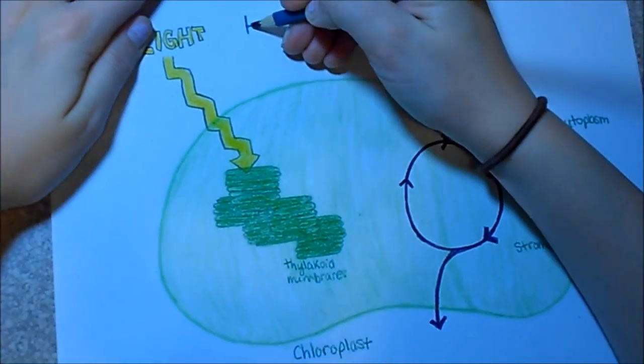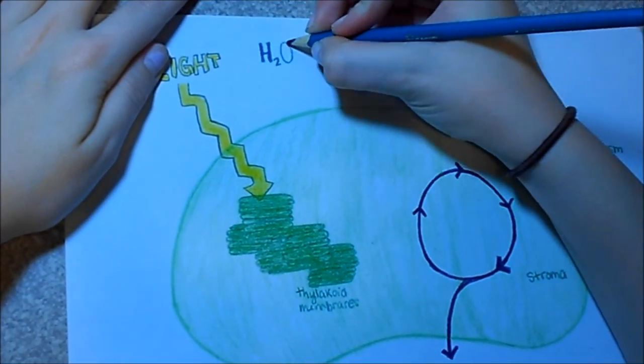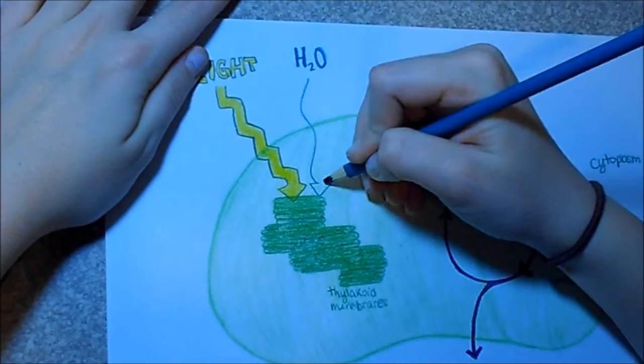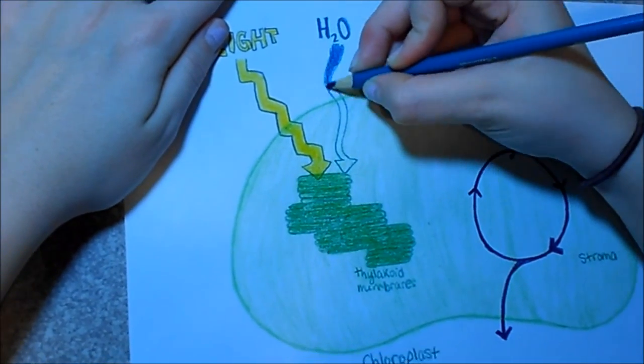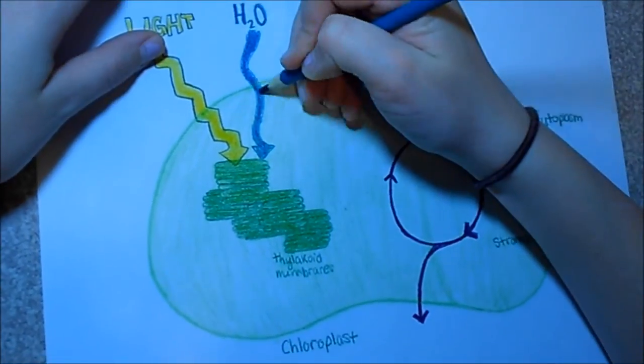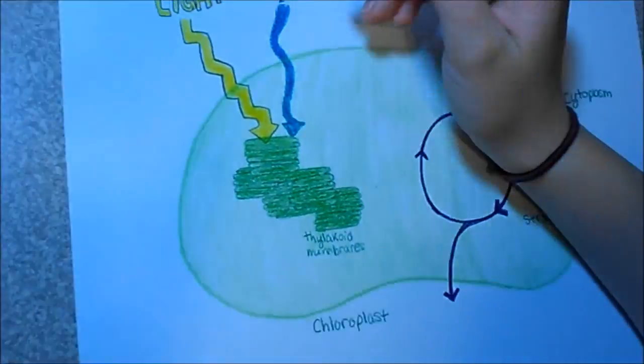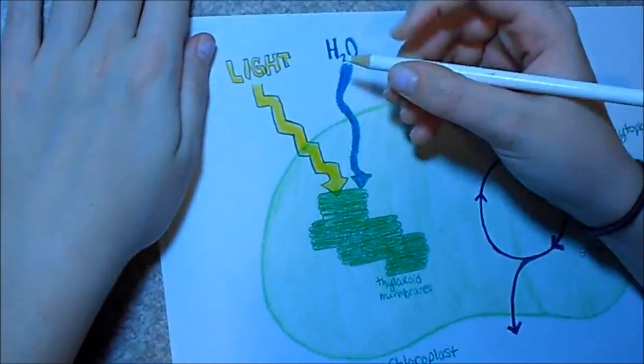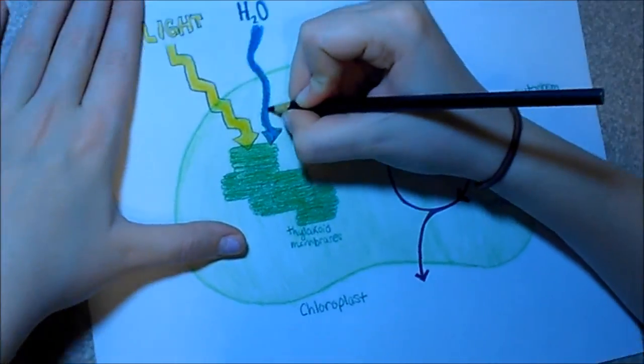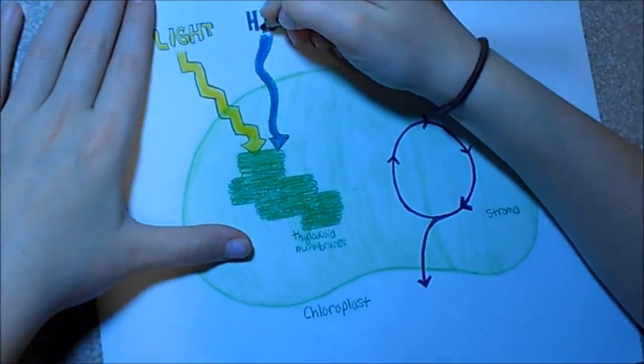H2O molecules enter the chloroplasts and through photolysis break apart into two hydrogen molecules and one oxygen molecule. The hydrogen molecules go into the ATP synthase, which is an enzyme in the electron transport chain that makes ATP, and the hydrogen molecules help to make ATP.